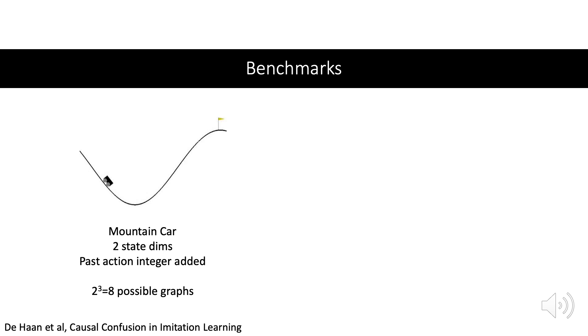We are going to demonstrate causal confusion in a simplified setup by adding information to the original state the expert observed to make a confounded state. The information we add is the past action.